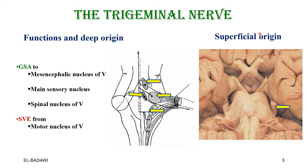The superficial origin: this is the largest cranial nerve — very large and very short at the same time — arising from the middle of the body of the pons at the origin of the middle cerebellar peduncle. That is the superficial origin.